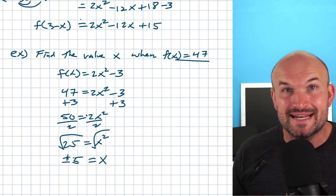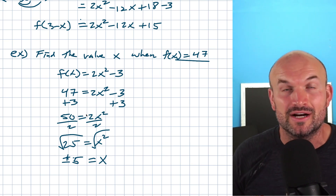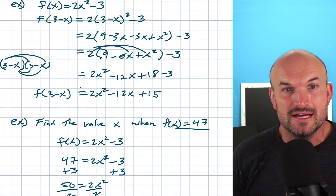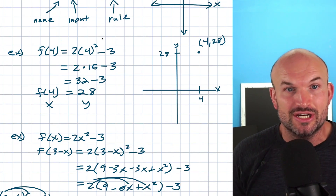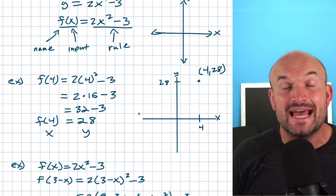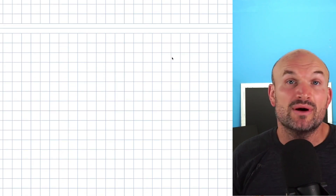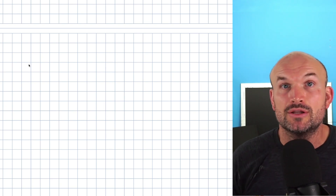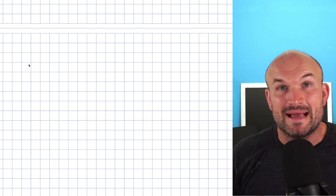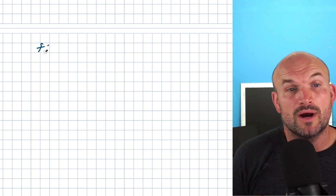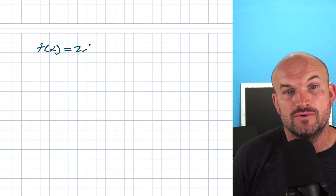I've been talking a lot about inputs and outputs for a very important reason: when dealing with functions, not only do you need to understand what function notation is and how we use it, but you also need to understand the domain and the range of functions. Right now I want to do a quick review of understanding domain and range and how we find it for a particular function. Let's use our function f of x equals 2x squared minus 3.